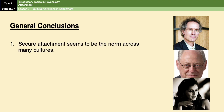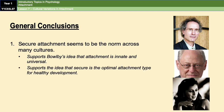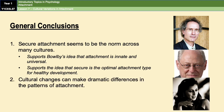General conclusions from these two pieces of research: first, secure attachment seems to be the norm across many cultures, which supports Bowlby's idea that attachment is innate and universal, and supports the idea that secure attachment is the optimal attachment type for healthy development. In evolutionary terms, anything that increases survival chances becomes more common. Second, cultural changes can make dramatic differences in patterns of attachment, as seen in Simonelli's study where societal changes actively impacted the prevalence of certain attachment types.